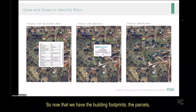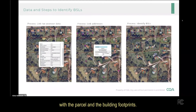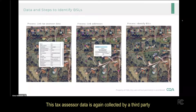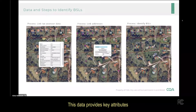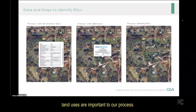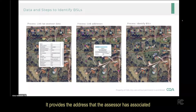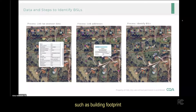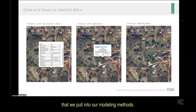Now that we have the building footprints and the parcels, the next key piece of information we bring in is the tax assessor records that we can associate with the parcel and the building footprints. This tax assessor data is collected by a third-party vendor and pulled from tax assessor records in each county. This data provides key attributes about the use of the land, including land use — whether residential single family or industrial. It provides potential building improvement values, the address the assessor associates with the parcel, and building information such as primary building footprint size, number of units, number of stories, and other pertinent information used in our modeling methods.